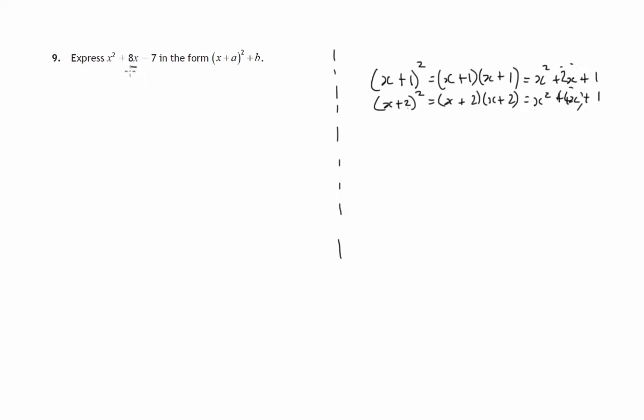So this 8x here is going to be twice the number that appears there. This would give you the idea that we should be squaring x plus 4. Now if we do x plus 4 squared, x plus 4 times x plus 4, we'll get x squared plus 4x plus 4x, that's your 8x, plus lasts give you 16. So that's x squared plus 8x plus 16.